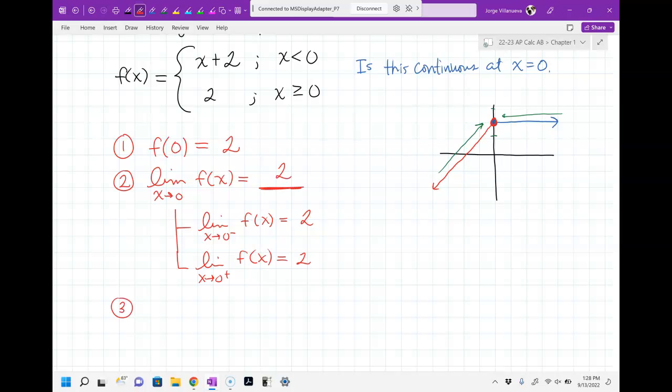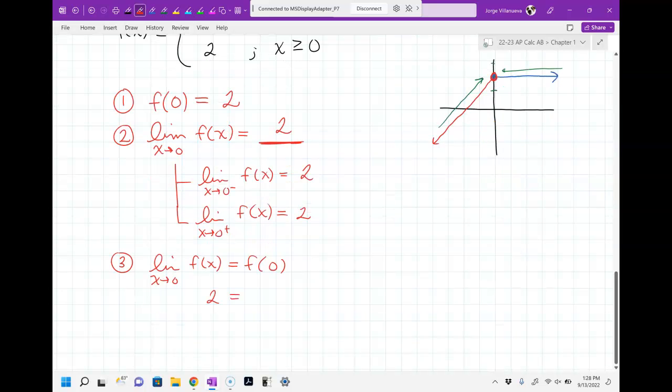What about from the right side? It wants to go to two. So they both have limits of two. So does the limit exist? And the limit is two. So now for the third step, you have to show, is it true that the limit as x approaches zero of f of x is actually f of zero? Well, yeah, the answer was two equals two. So there you go. I just showed, I proved continuity. Three steps. The point has to exist. The limit has to exist. And the point and the limit must have the same value. Any questions on this one?